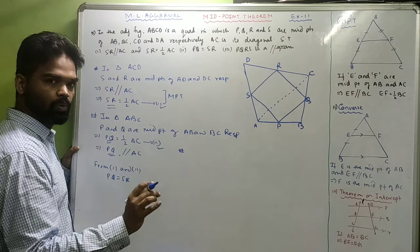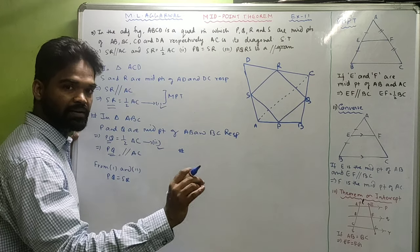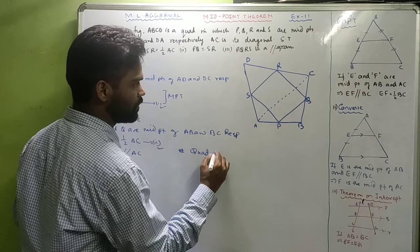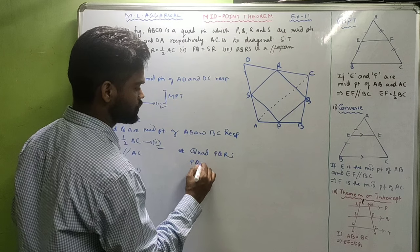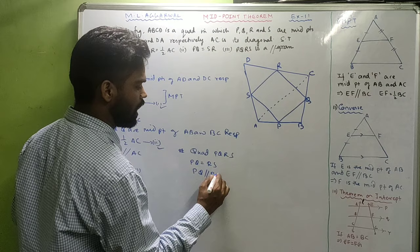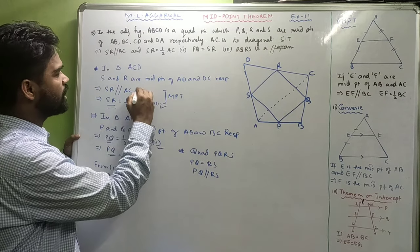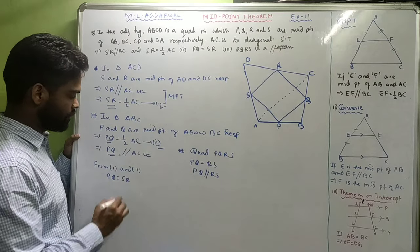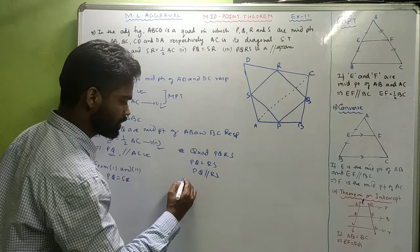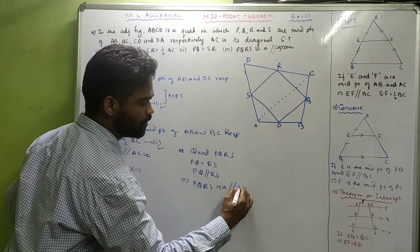Since PQ is parallel to AC and SR is parallel to AC, PQ and SR are parallel to each other. In the quadrilateral, PQ equals RS and PQ is parallel to RS, which implies PQRS is a parallelogram.